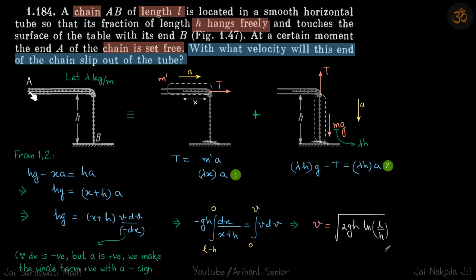We are given a chain of length L, part H of which is hanging from the end of the tube. When this chain is released, it will start to fall down. We need to find when this end of the chain just escapes the tube, what will be the velocity of the chain.